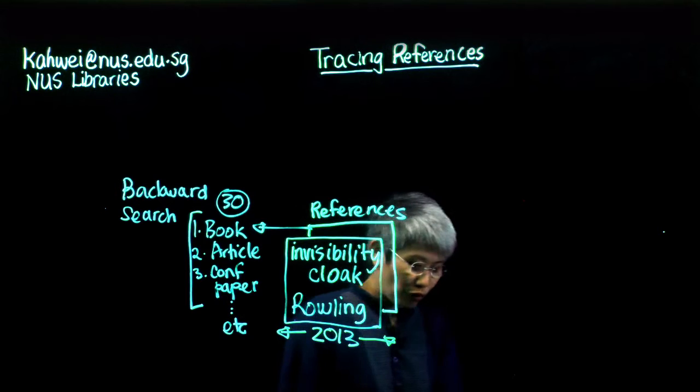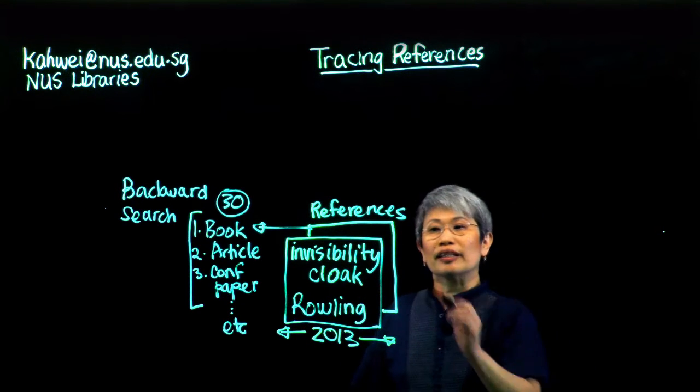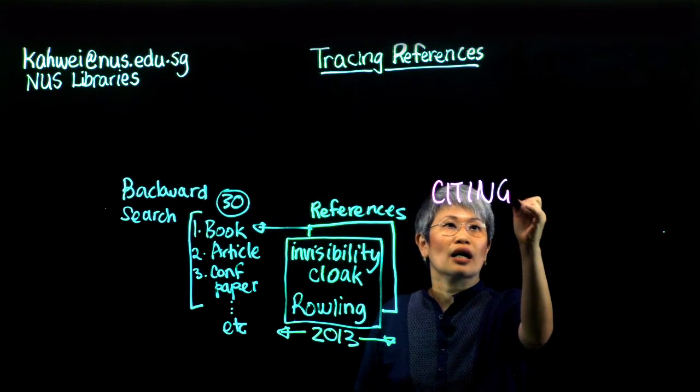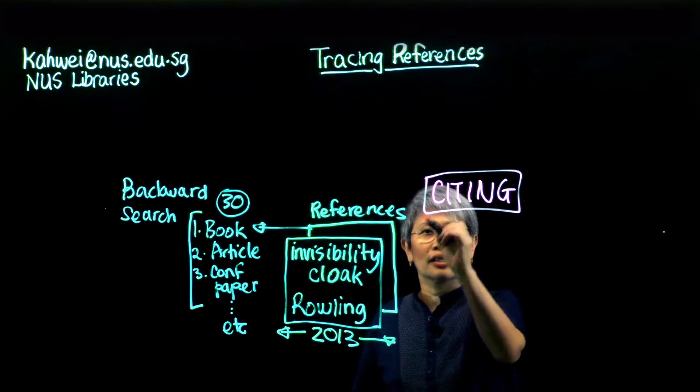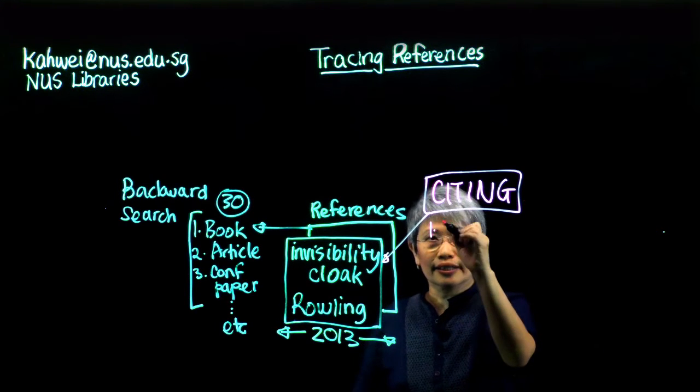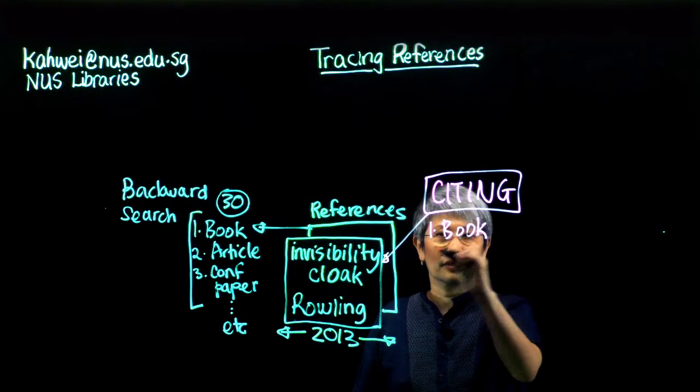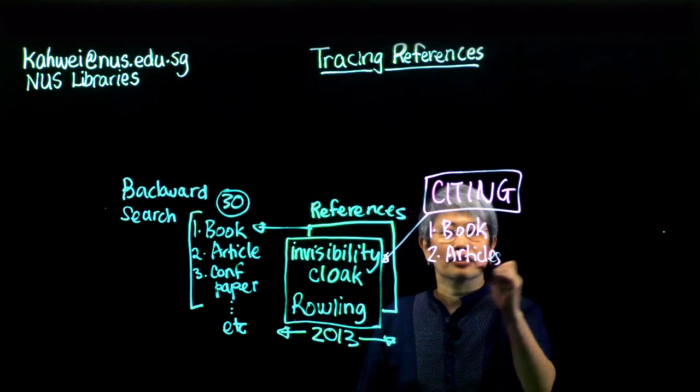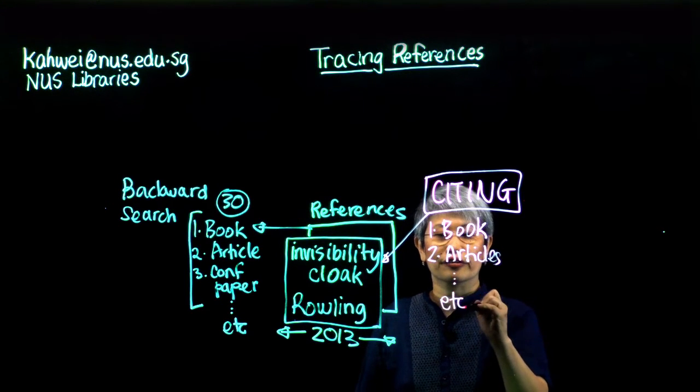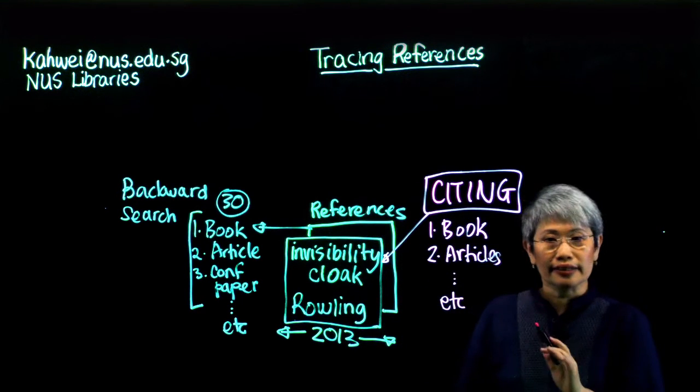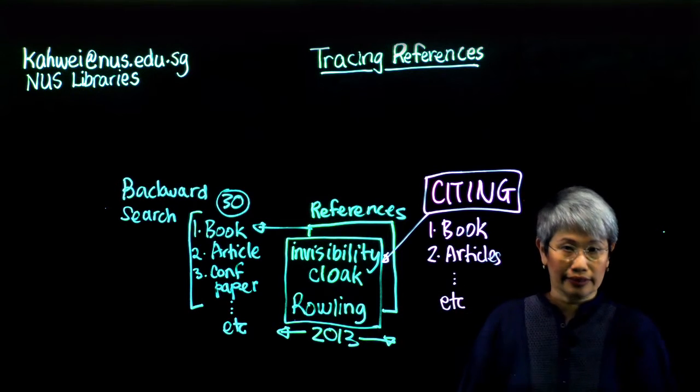How about if we look for publications that have been citing this Invisibility Cloak article? Now, what are citing publications? Citing publications are the same. They are books, journal articles, and conference papers and so forth. These books and journal articles would have reference lists that cite this particular article.